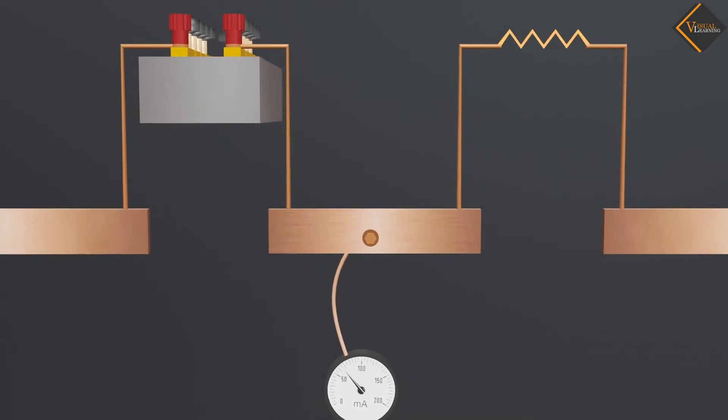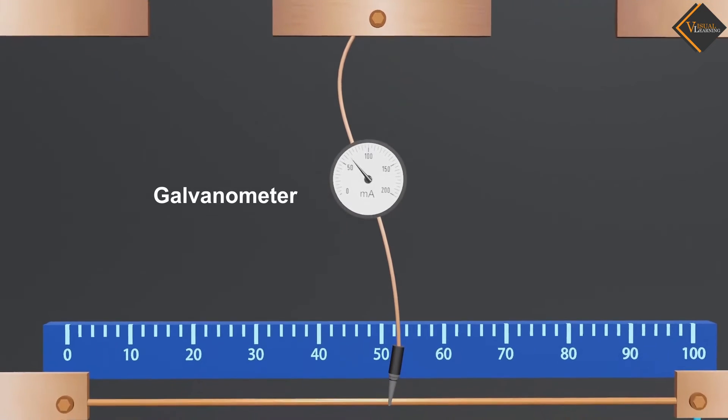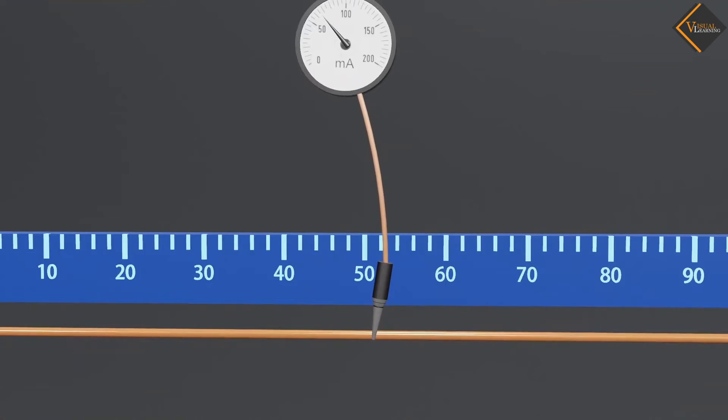From the midpoints of the resistance box and the unknown resistor, a galvanometer is connected, with its other end attached to a wire with a jack.